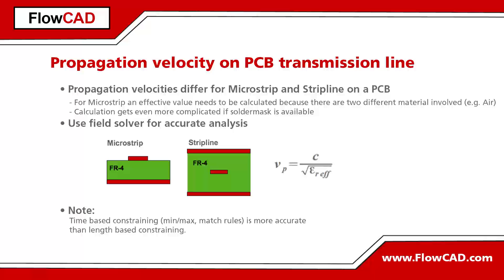For microstrip, this calculation is not that trivial, as different materials are involved — typically air on top of the conductor. The situation gets even more complicated if solder mask coating is present. In any case, the material distribution is not homogeneous.